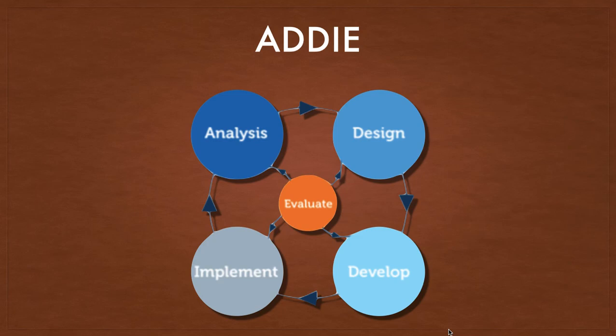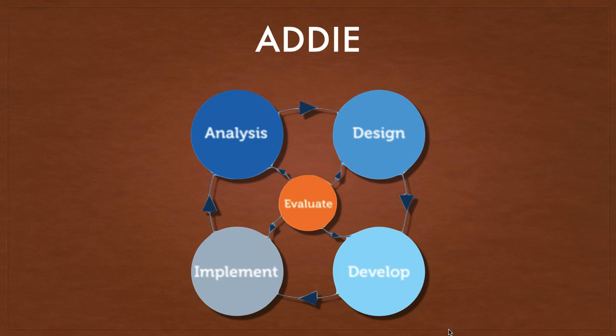Originally developed in 1975 at Florida State University, the ADDIE model is a five-stage systems process popularly used as the framework for a variety of other design models over the years. The ADDIE acronym stands for Analysis, Design, Development, Implementation, and Evaluation. It is an iterative process whose core is evaluation, allowing formative assessment performed throughout the process to allow for revisiting and revising any previously completed stage.